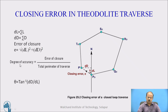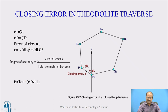We can assess the degree of accuracy achieved, which equals the length of the closing error divided by the total perimeter of the traverse. In first order work it is expected to be 1:10,000 — meaning 1 metre error per 10,000 metres is permissible. In second order it is 1:5,000, and in third order 1:2,000. Depending on the desired order of accuracy, we decide whether the error is acceptable and, if within the acceptable limit, proceed with redistribution or removal of that error.